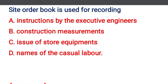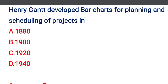Next question: site order book is used for recording — option A: instructions by the executive engineers, option B: construction measurements, option C: issue of store requirements, option D: names of casual labors. The correct answer is option A: instructions by the executive engineers.